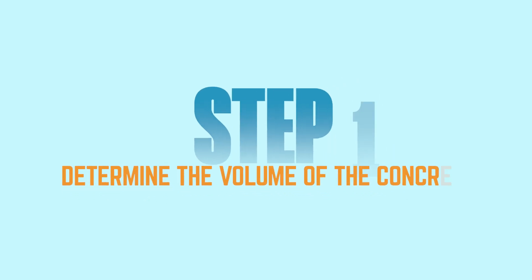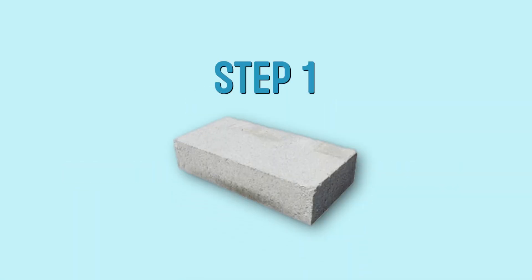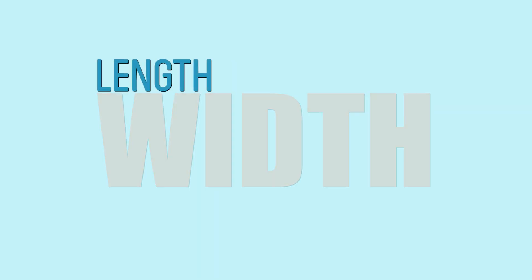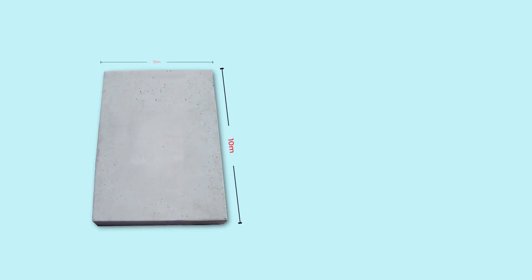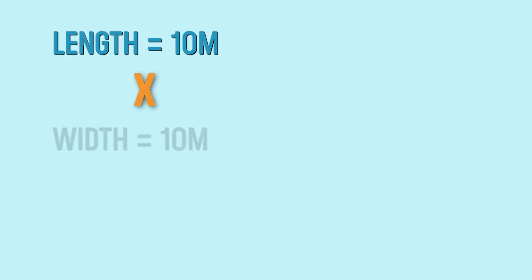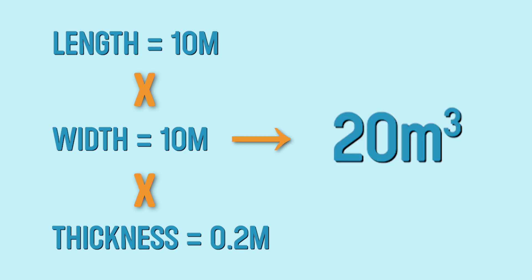Step 1: Determine the volume of concrete. The first step is to calculate the total volume of the concrete slab. This is done by multiplying the length, width, and thickness of the slab. Using a length of 10 meters, a width of 10 meters, and a thickness of 0.2 meters, the calculation is: 10m × 10m × 0.2m, which totals 20 cubic meters.